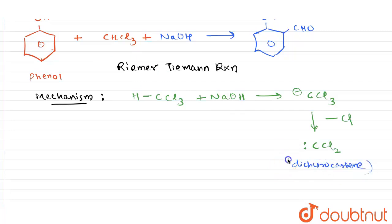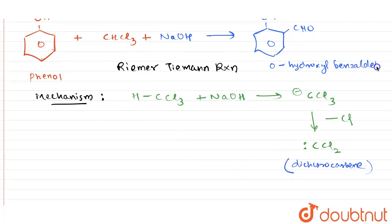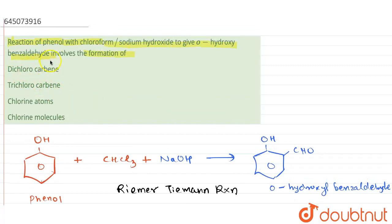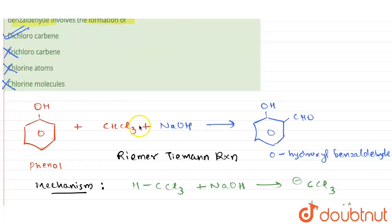This intermediate, dichlorocarbene (CCl2), reacts with the phenol molecule to form orthohydroxybenzaldehyde. Checking the options: the first option is dichlorocarbene, which is the correct answer. Trichlorocarbene is never formed, so that is incorrect. Chlorine atoms and chlorine molecules are also not correct. Only dichlorocarbene is the correct option.